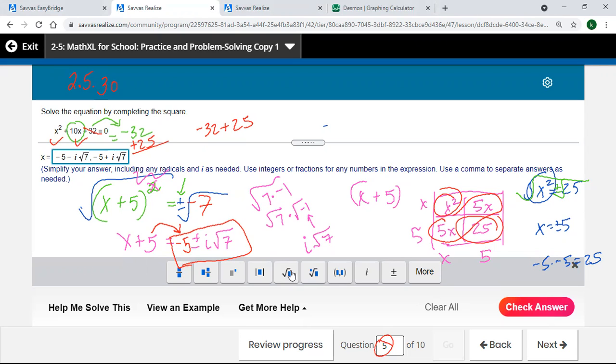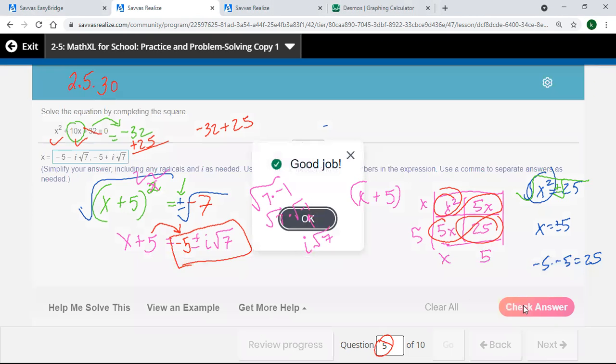Negative 5 plus or minus. So it's two different answers. One with the plus, one with the minus i square root 7. And that, my friends, should be the correct answer.